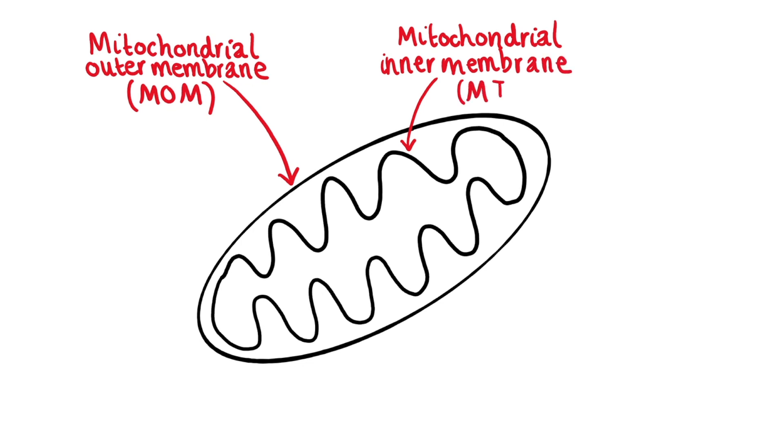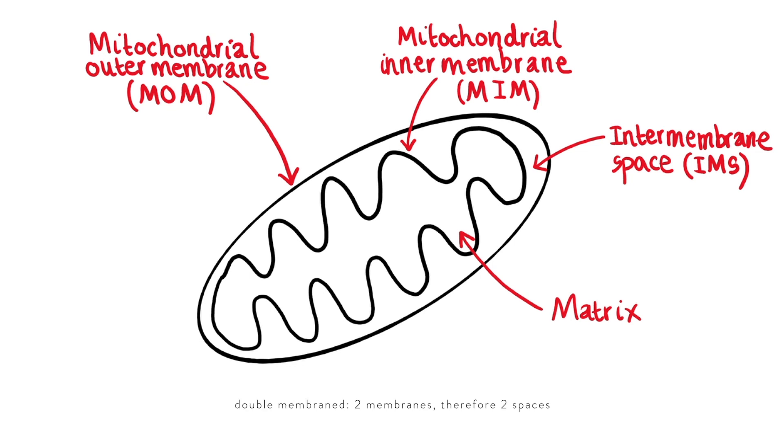You can remember this as MIM and between those two membranes we have what we call the intermembrane space or the IMS and then enclosed within the mitochondrial inner membrane is another space called the matrix. It's important to remember that the mitochondria is a double membraned organelle and because it has two membranes it means that we have two spaces. The IMS or the intermembrane space between your outer membrane and your inner membrane and then the matrix inside the inner membrane.